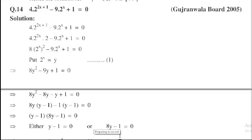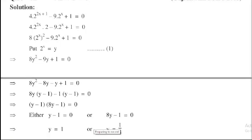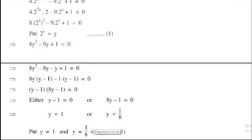Either y - 1 = 0 or 8y - 1 = 0. So y = 1 or y = 1/8.